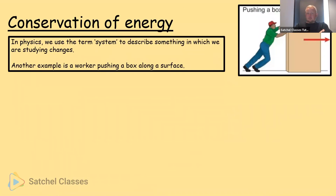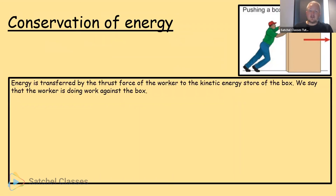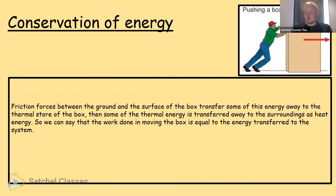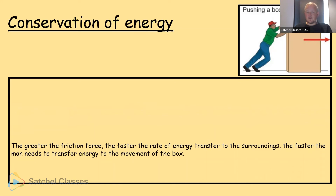Consider a different system — a worker pushing a box along a surface. Energy is transferred by the thrust force of the worker to the kinetic energy store of the box. Friction forces between the ground and the box transfer some of this energy away to the thermal store of the box, so where the box contacts the ground it gets hotter. Some of that thermal energy is then transferred away to the surrounding air as heat energy.